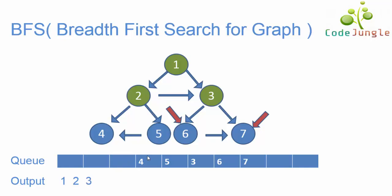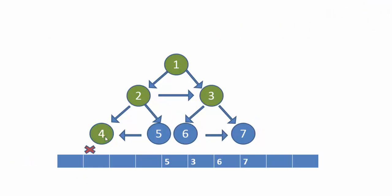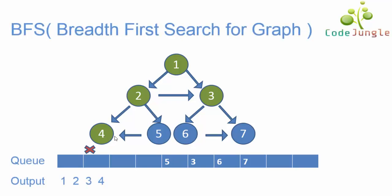Next, the next element in the queue is 4. We will see what all are the neighbor elements for 4. Here there are no neighbor elements for 4, so no element has been pushed into the queue. Note that 4 has been moved to the output.